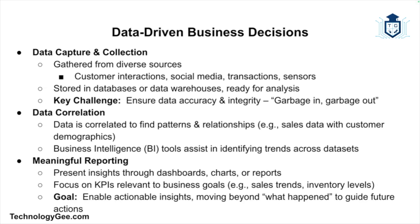The second stage is data correlation. Once collected, data must be correlated to find meaningful patterns or relationships. For example, a business might correlate sales with customer demographics to understand which segments are purchasing certain products. This is where business intelligence tools come into play, helping organizations identify trends and correlations between data sets.